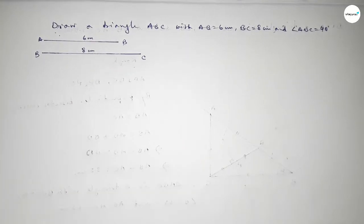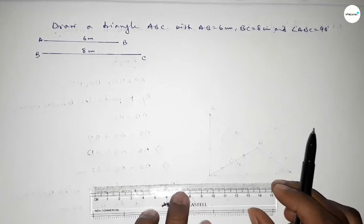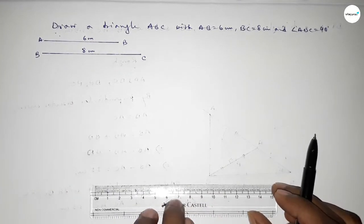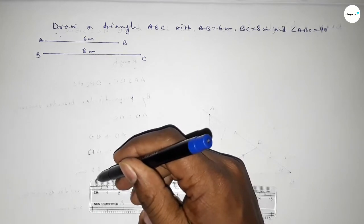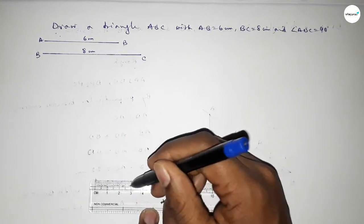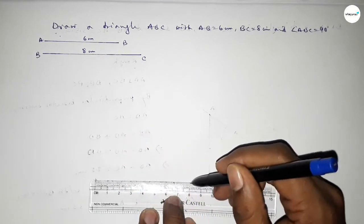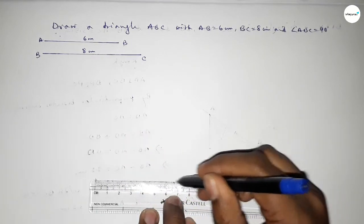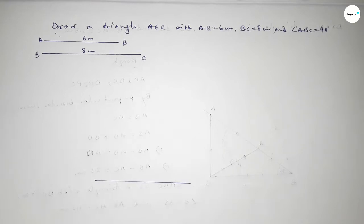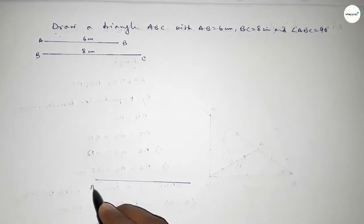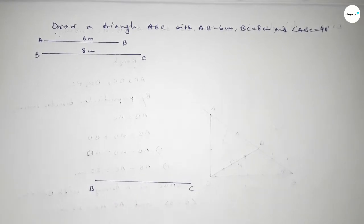Now first we have to draw a line of length 8 centimeters: 0, 1, 2, 3, 4, 5, 6, 7, 8. Taking here point B and here point C.